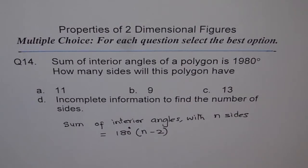Another formula is sum of exterior angles. Remember, sum of exterior angles is always 360 degrees.